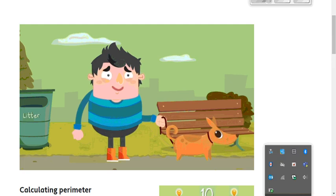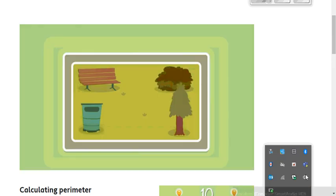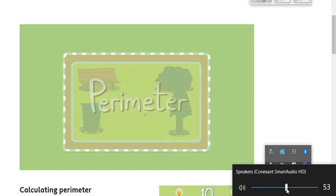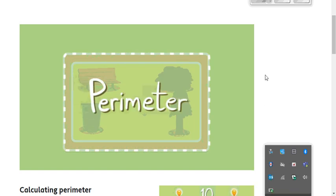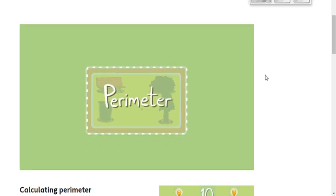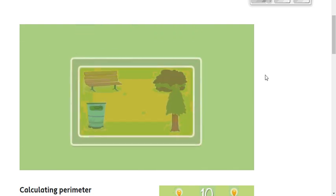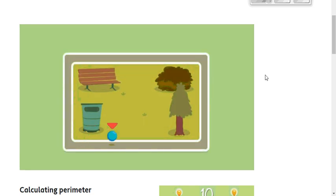How far are you going to walk today? Are you going to walk all around the outside of the park? The outside edge of a shape is called the perimeter. It's easy to know how far you're going to walk. We just measure the perimeter. How many steps does it take you to walk along the first side? 10 steps. And how many steps to walk around the next side? 6 steps.